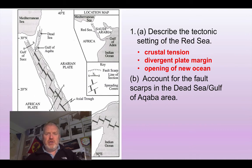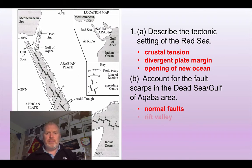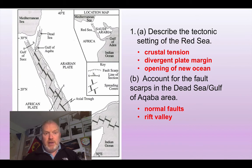The second question asks you to account for the fault scarps. Fault scarps are ridges created by fault movement — the upthrow side of a fault. The faults in this area are all going to be normal faults because of this crustal tension and extension of the crust. What we see as a result is a rift valley. Starting in the north, the area around the Dead Sea and the Jordan Valley is a rift valley. The main area of the Red Sea itself is also a rift, and this continues down through eastern Africa to make the East African Rift Valley.